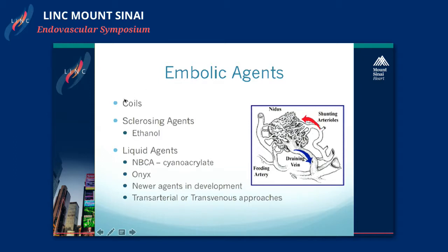Coils are sometimes used but actually less so, because you can really only get to medium-sized arteries or smaller, even tinier arteries with coils, so you can't really get good penetration into the nidus itself. There has also been use of sclerosing agents — taking a microcatheter into a feeding artery and re-injecting 100% ethanol to burn the malformation and destroy it.